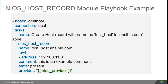This is the NIOS host record module. As Salish mentioned, in earlier days people manually assigned IPs to printers or hosts by parsing through a spreadsheet to find the next available IP. Here we are automating the host record module. I'm calling the host record module with the name 'testhostansible.com' and giving an IPv4 address of 192.168.11.0. I'm giving a static IP here, but you can make this a dynamic IP assignment as well by using the Ansible Infoblox lookup plugin.